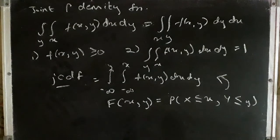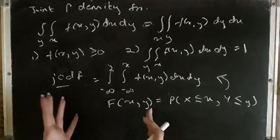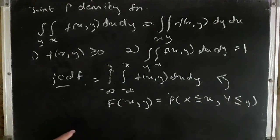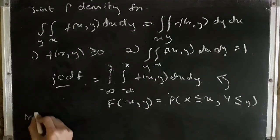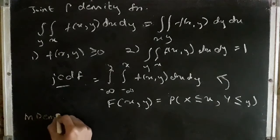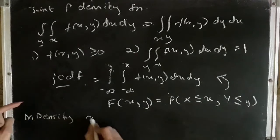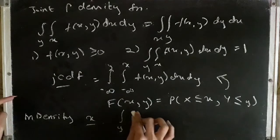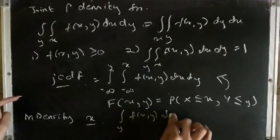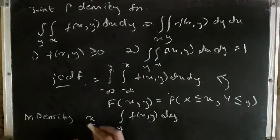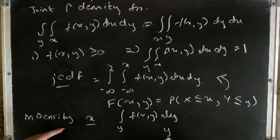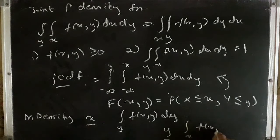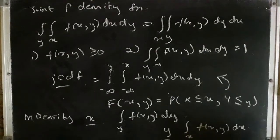What is the marginal density in the continuous case? In the previous discrete case we had marginal distribution; now we have marginal density. The marginal density for X is the integration over the range of y of f(x, y) dy. The marginal density for Y is the integration over the range of x of f(x, y) dx.